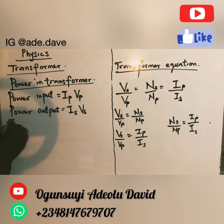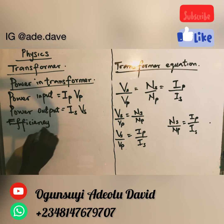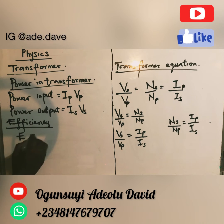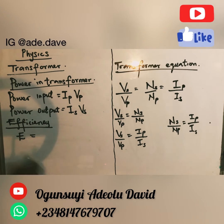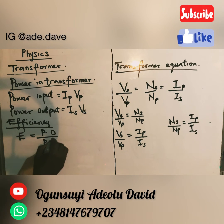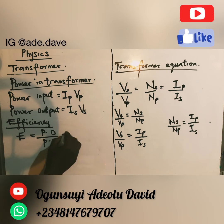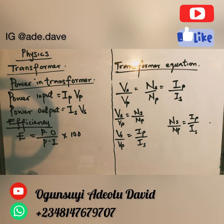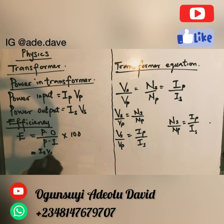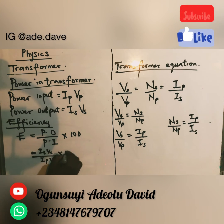In order to calculate the efficiency of a transformer, efficiency equals power output over power input, times 100. That is: efficiency equals (IS × VS) divided by (IP × VP), times 100.